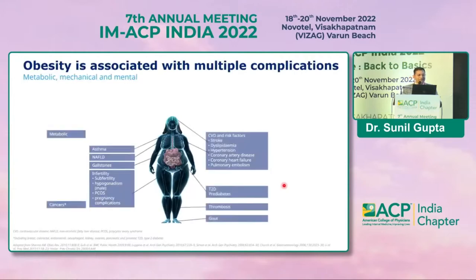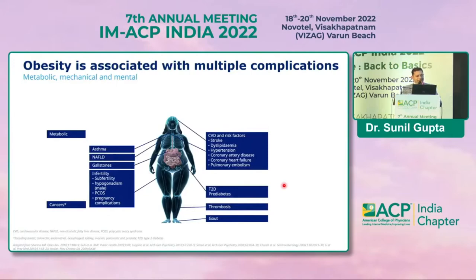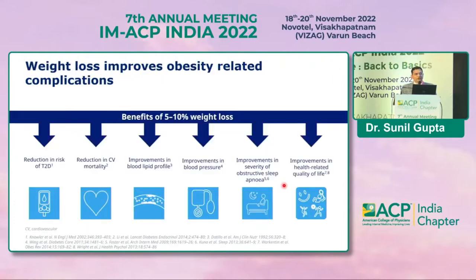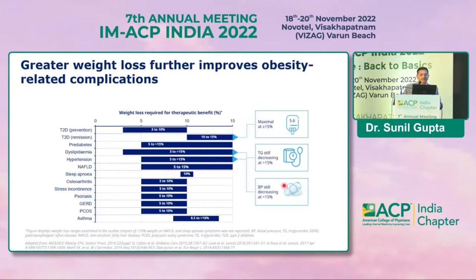Obesity is associated with multiple complications — metabolic, mechanical, and mental — including asthma, fatty liver disease, gallstones, infertility, hypogonadism, PCOD, pregnancy complications, cancers, cardiovascular disease, stroke, dyslipidemia, hypertension, coronary artery disease, type 2 diabetes, pre-diabetes, gout, osteoarthritis, sleep apnea, urinary incontinence, and mental disorders. If you reduce your weight by just five to ten percent, you can reduce the risk of type 2 diabetes, cardiovascular mortality, and improve lipid profile, blood pressure severity, and sleep apnea.